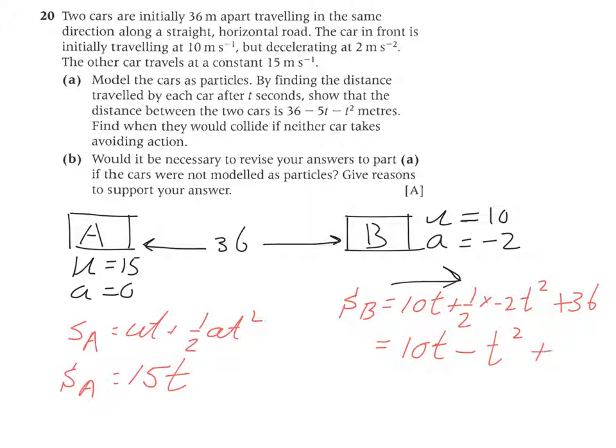If we simplify that, SB will become 10T minus T squared - half times minus 2 is minus 1 - plus 36. Fantastic. Now they are asking, show that the distance between the two cars is 36 minus 5T minus T squared. How do you find the distance? That will be this expression take away that expression, so 10T minus T squared plus 36 minus 15T.